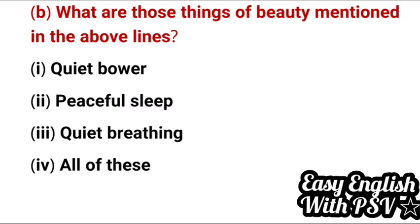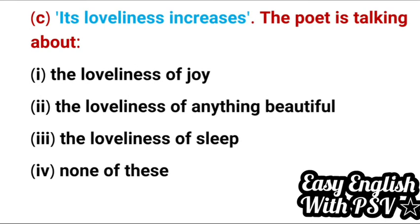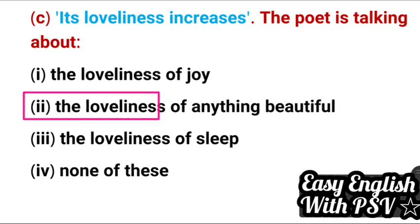Question 2: What are the things of beauty mentioned in the above lines? Options: quiet bower, peaceful sleep, quiet breathing, all of these. Correct answer: all of these. Question 3: 'Its loveliness increases' — the poet is talking about whose loveliness increases? Options: the loveliness of joy, the loveliness of anything beautiful, the loveliness of sleep, none of these. Correct answer: the loveliness of anything beautiful.